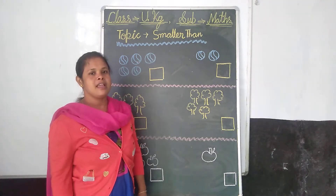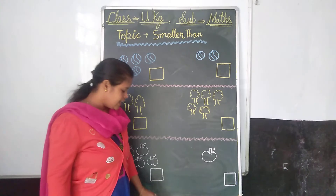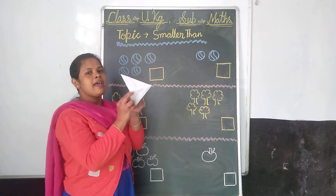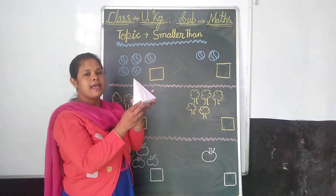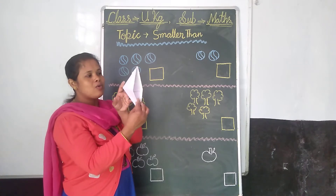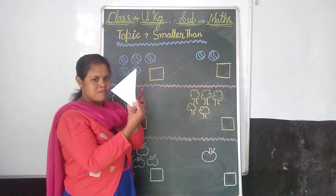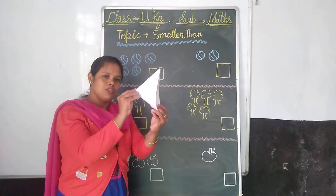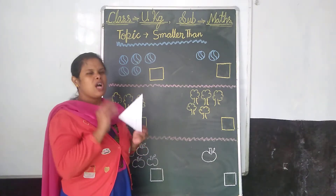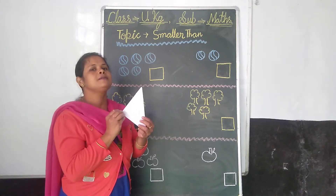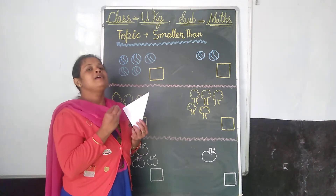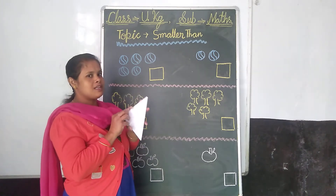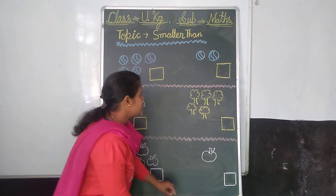Today we will learn smaller than. In the previous class we learned greater than. Now we will learn smaller than. Do you know what this is? This is a crocodile mouth. Where there is more food, the crocodile opens his mouth. Where there is less food, he closes his mouth.